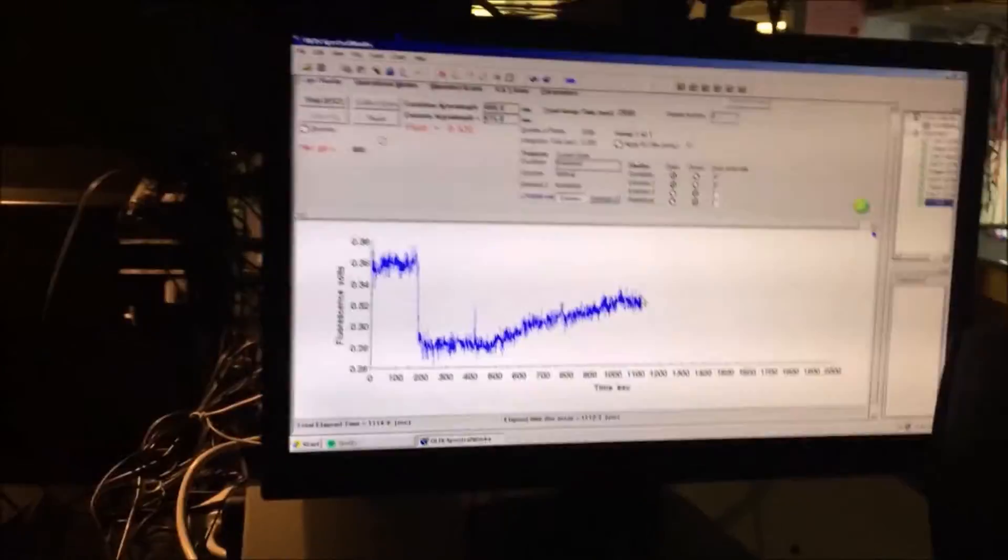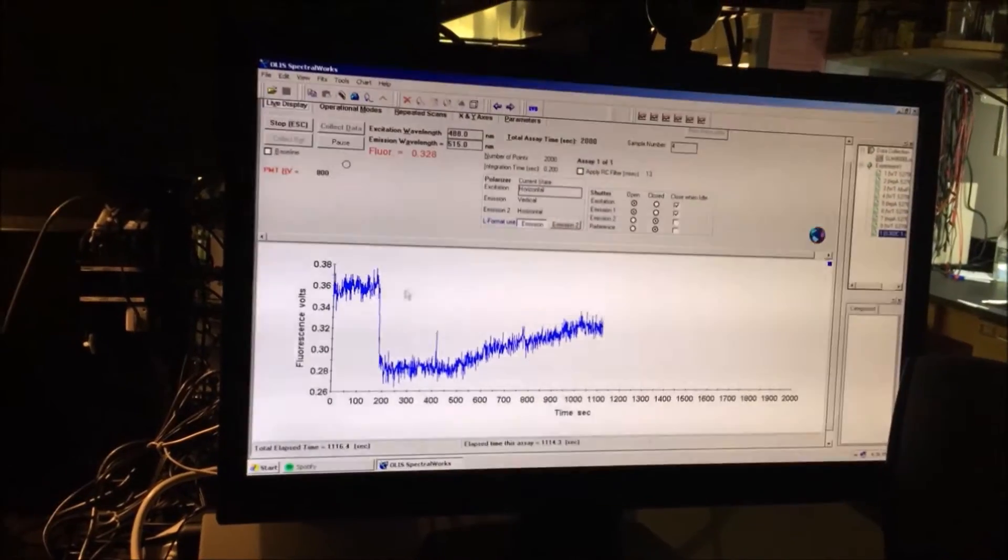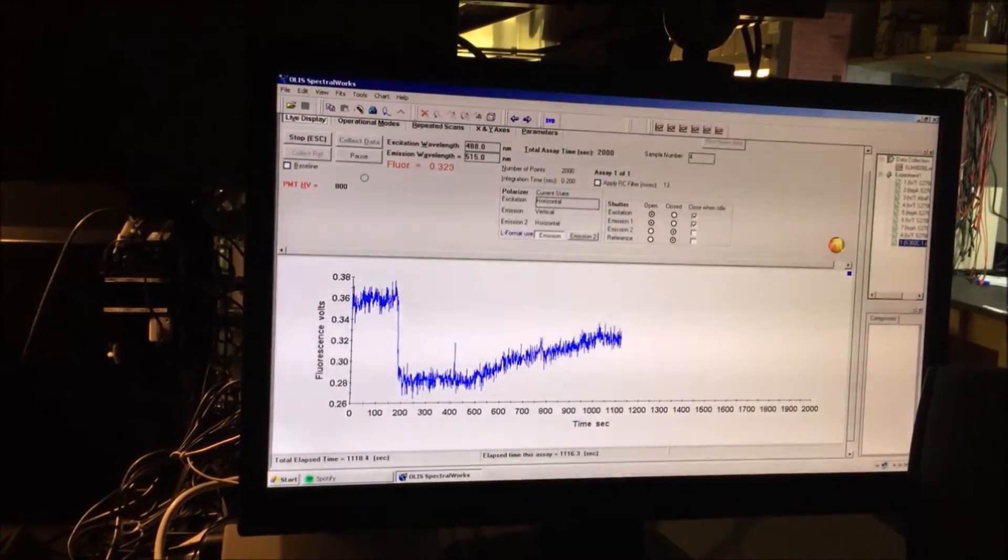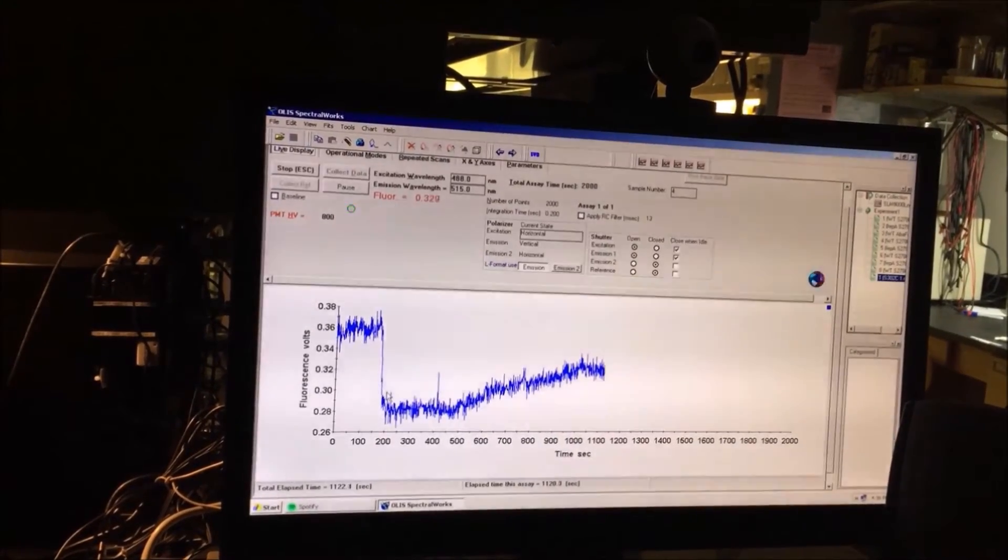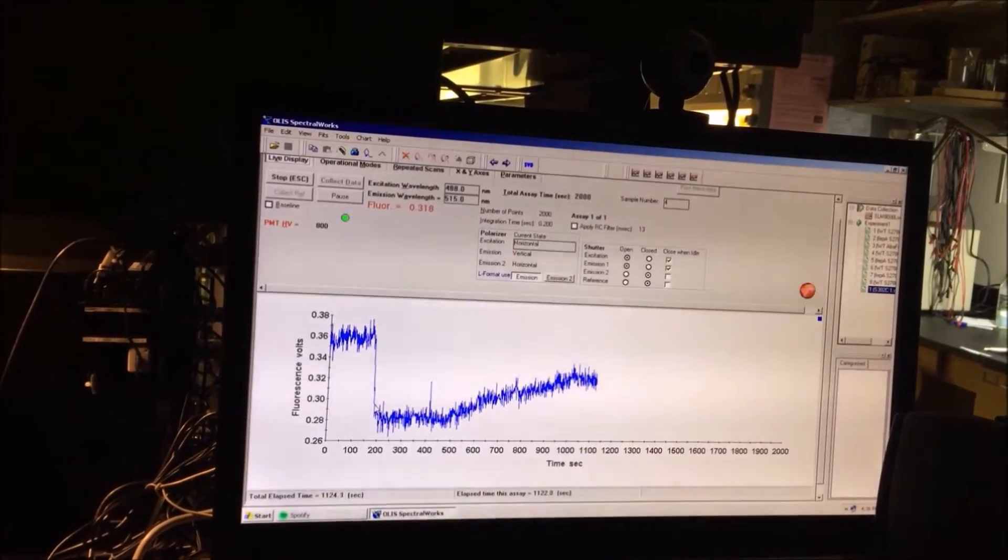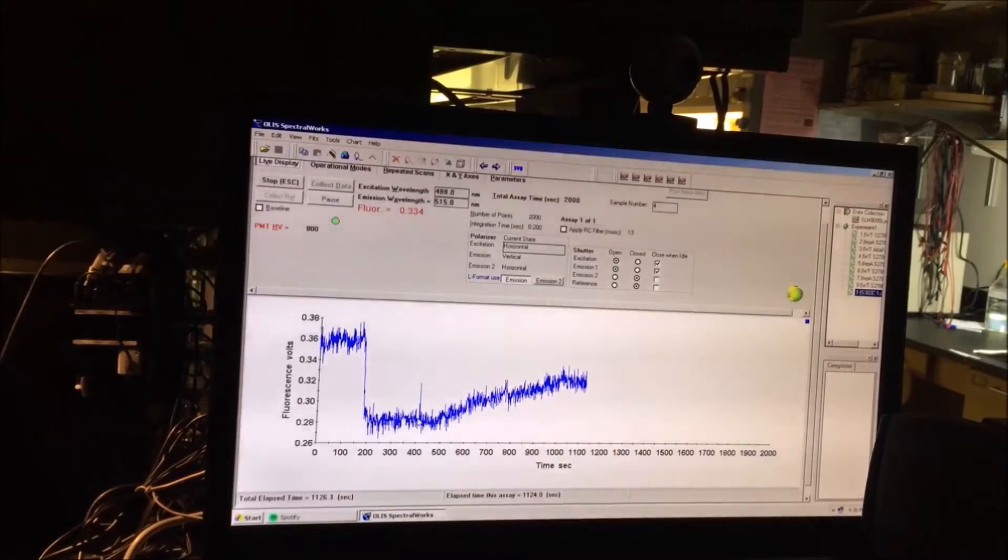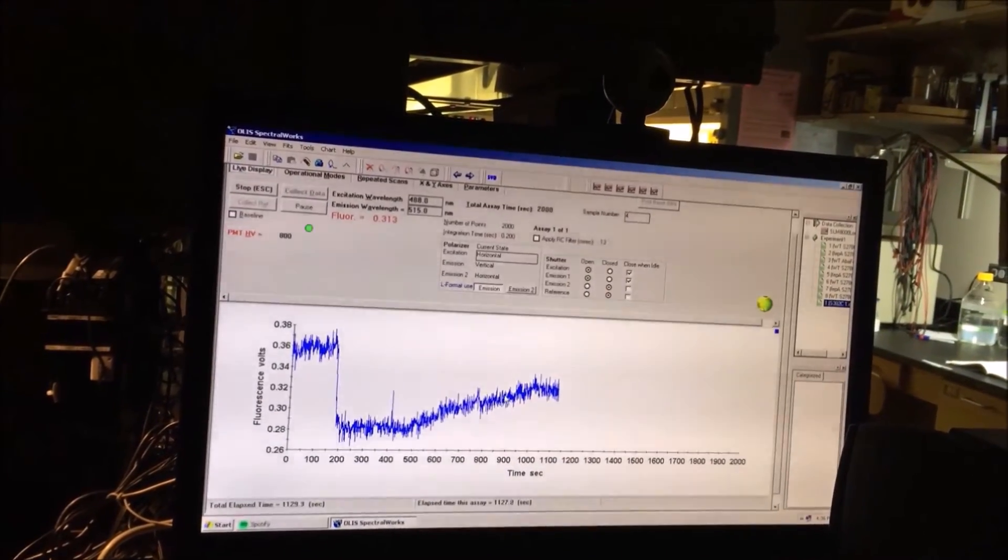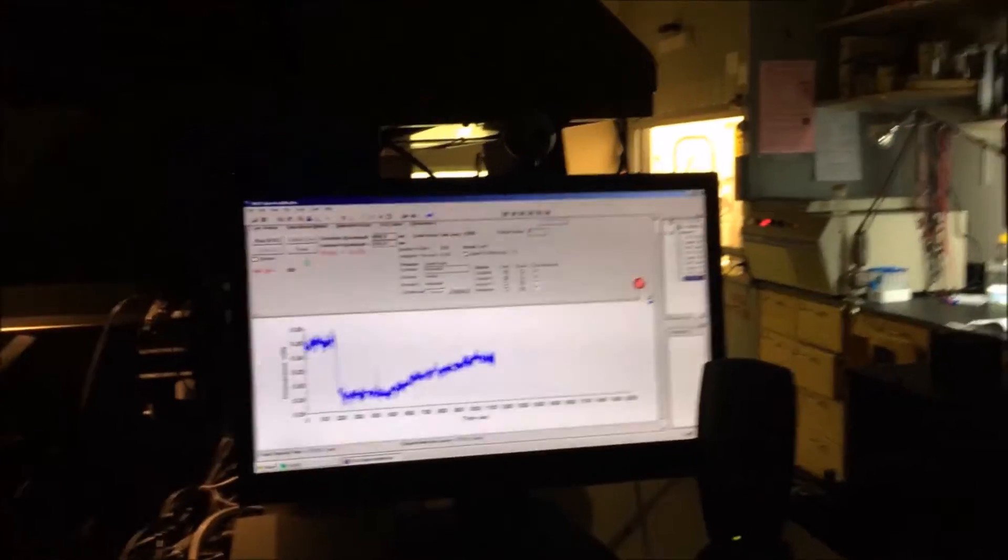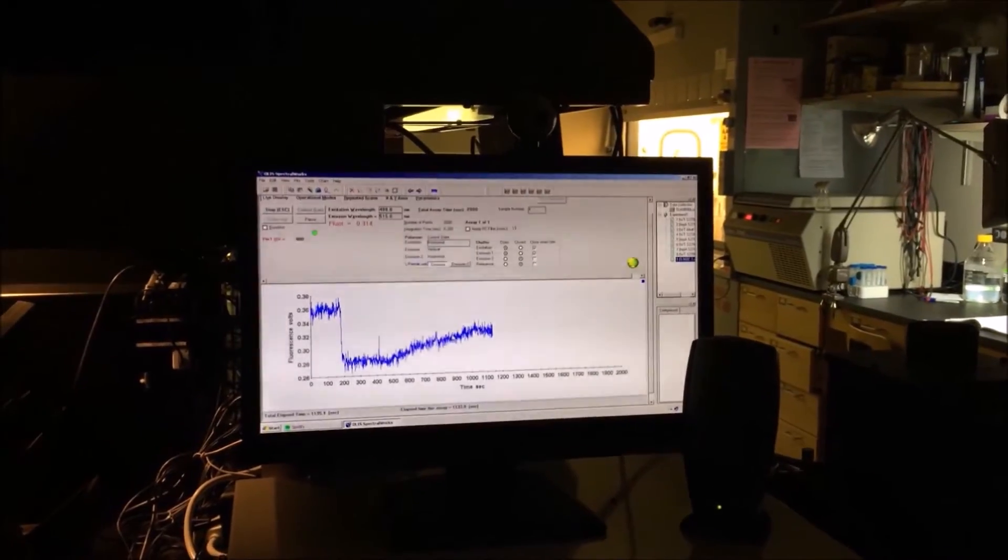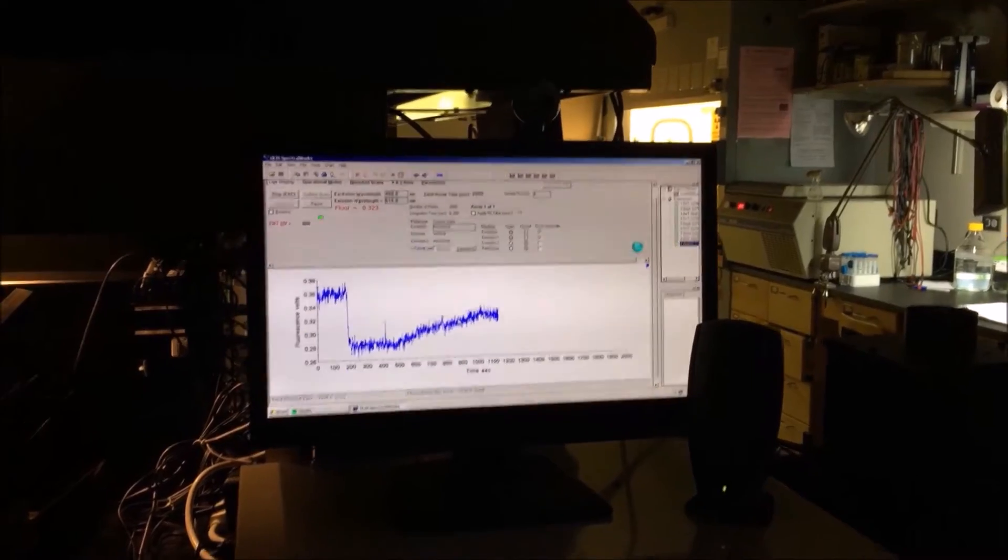So explain what happened. So here is the original fluorescence from the labeled FepA protein that we see a drop in fluorescence as that ferric enterobactin is added and binds to FepA. And then over time we see a recovery as the ferric enterobactin is transported. Yeah. That is really impressive. I have to say that it's very encouraging. Definitely.